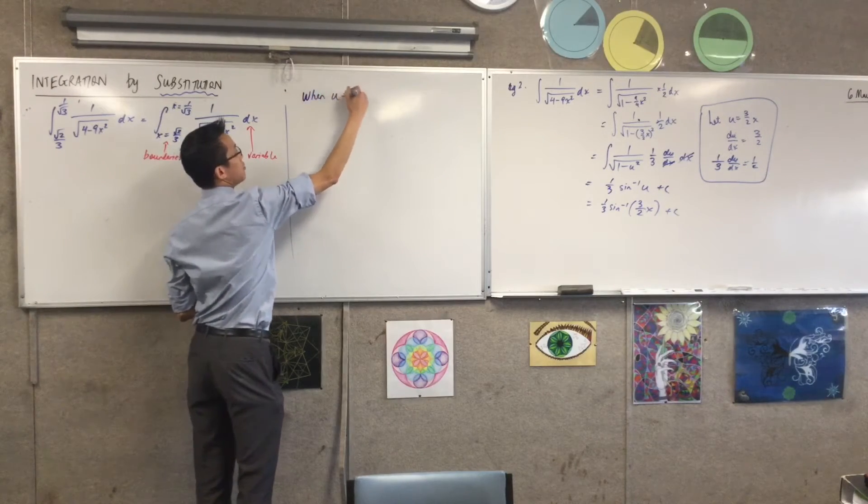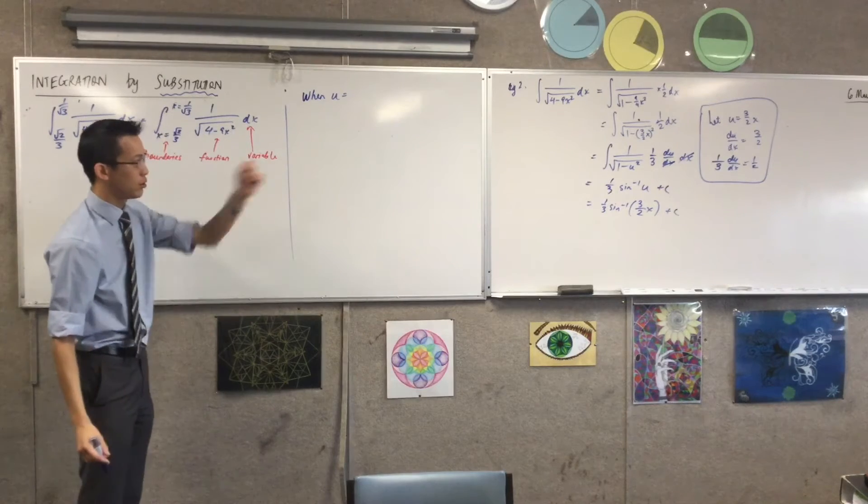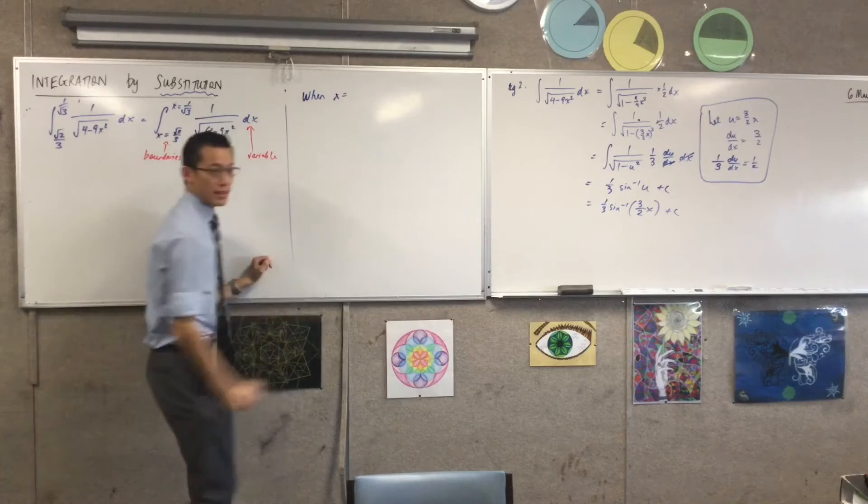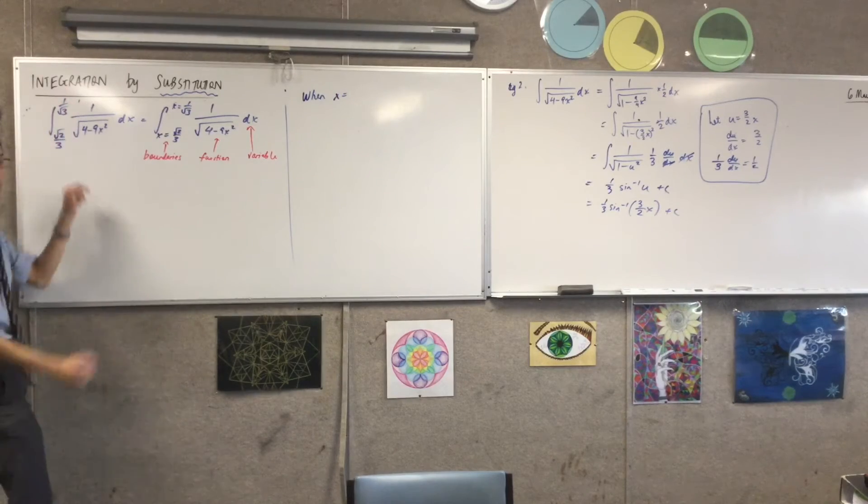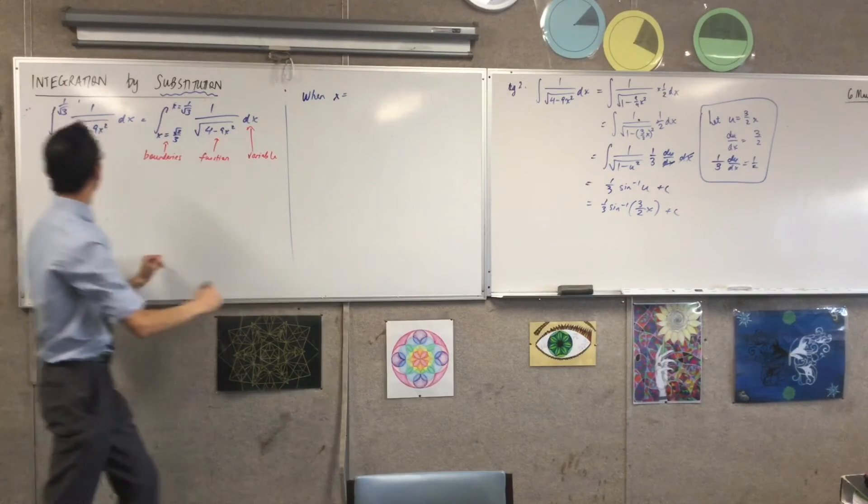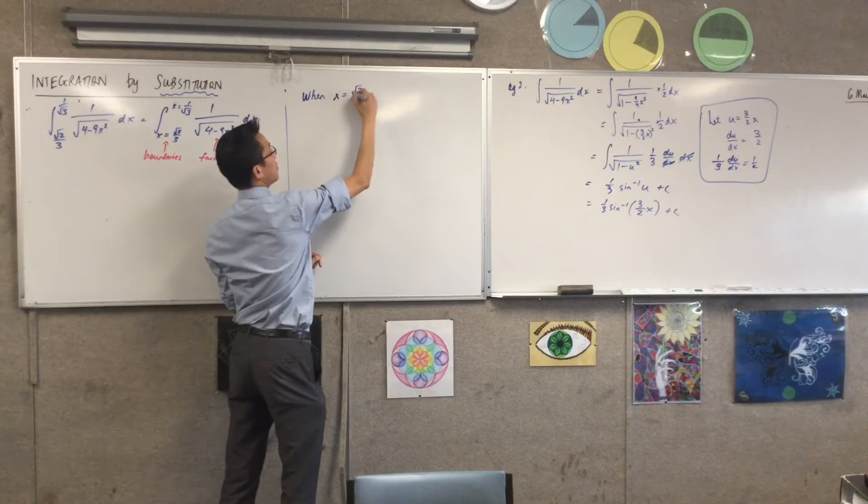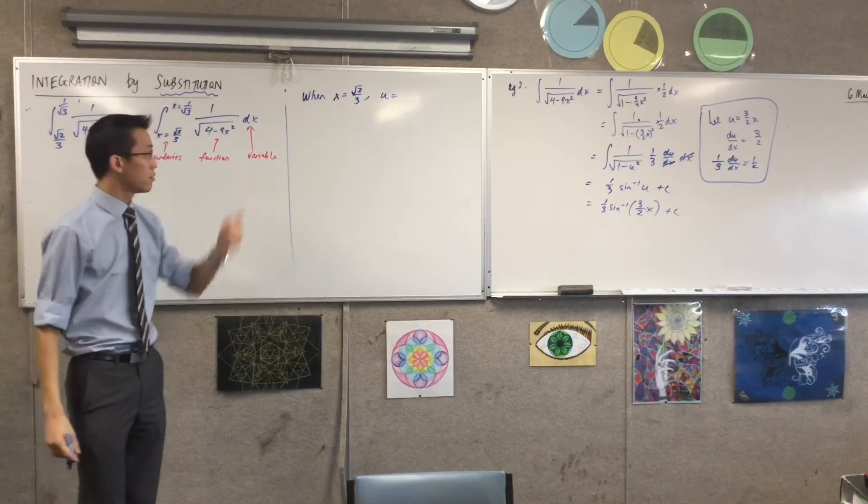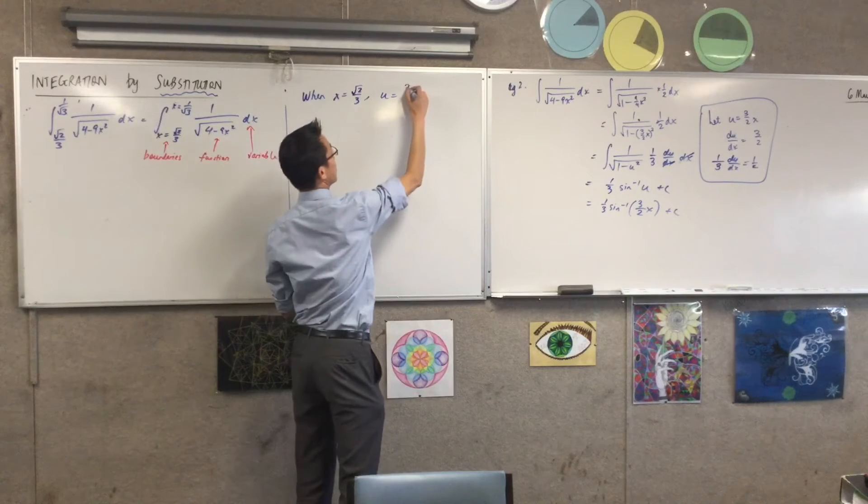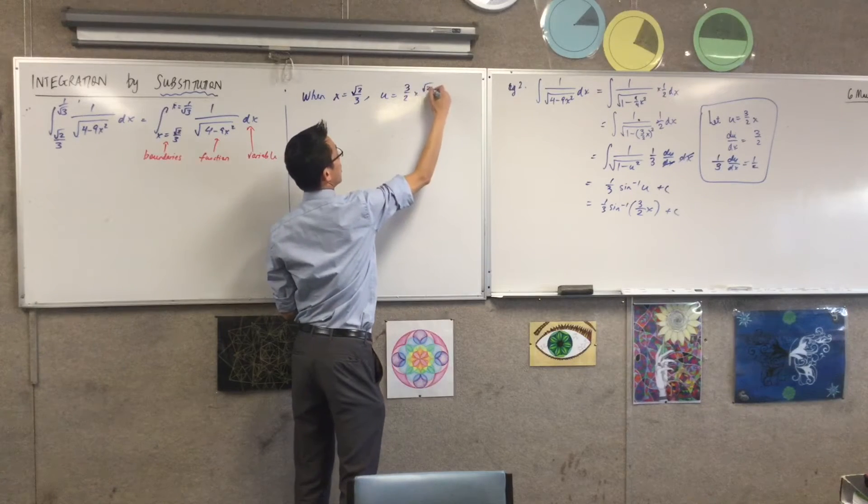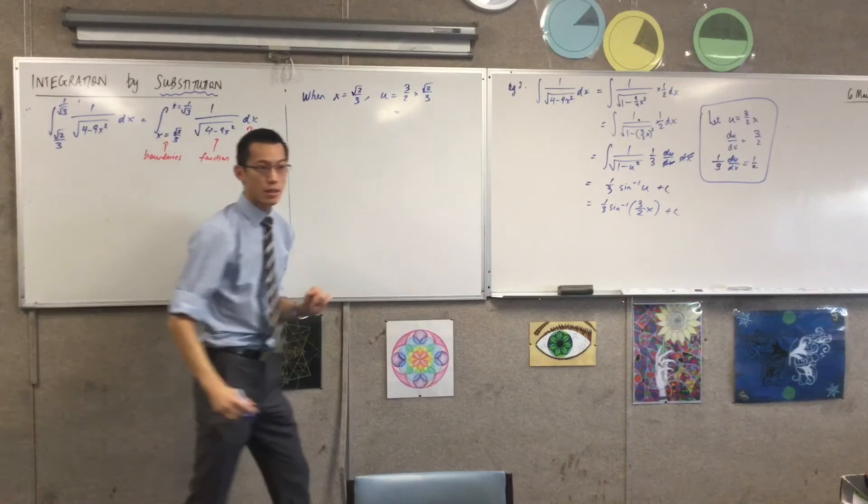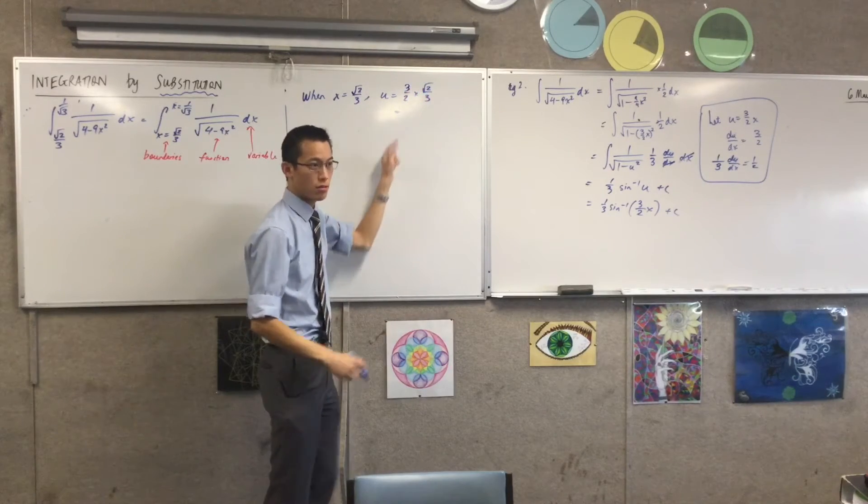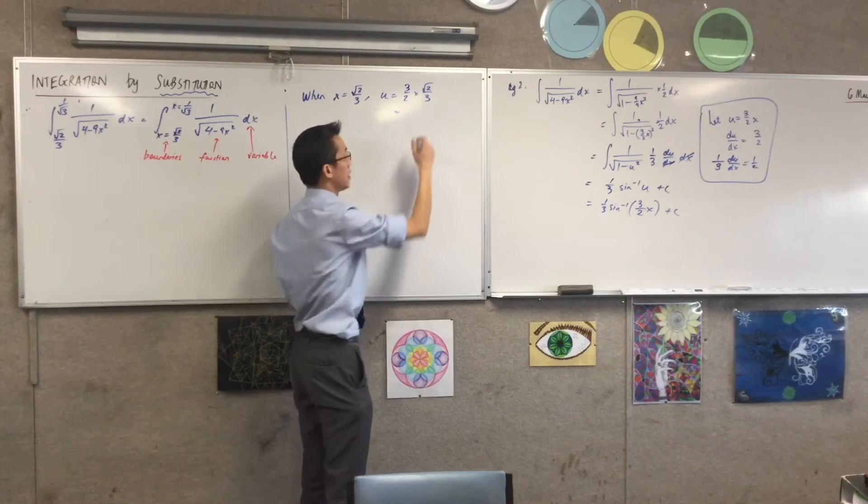When x equals - I'm going to do an evaluation - when x equals, I'm going to check each of the boundaries. I'll do the small one and then I'll do the bigger one. So when x equals √2/3, u is going to equal 3/2 times that. You can see here my 3 is going to cancel, I'm going to be left with √2/2, which is 1/√2. You can see where this value actually comes from, because I'm going to need to substitute into an inverse trig function.